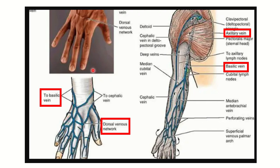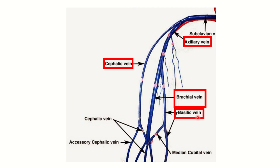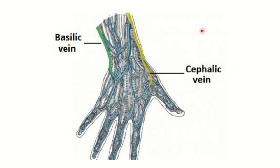The basilic vein lies on the medial aspect and drains into the brachial vein. The brachial vein then continues as the axillary vein, which continues as the subclavian vein. The cephalic vein is located along the lateral aspect of the arm and forearm, and it drains directly into the axillary vein, which then continues into the subclavian vein.